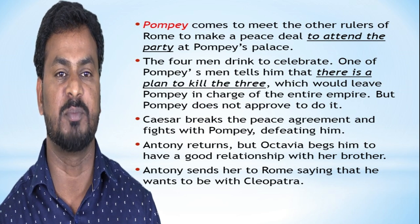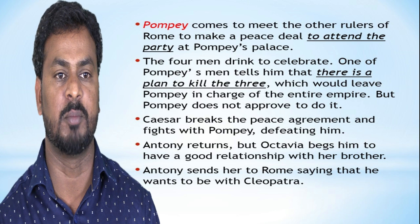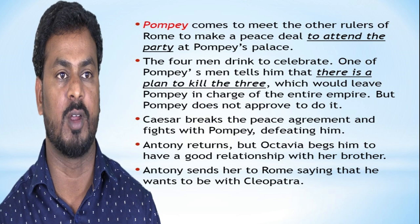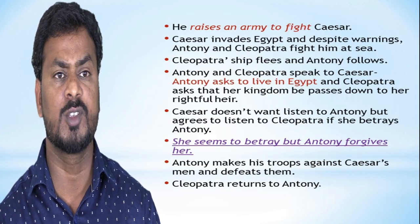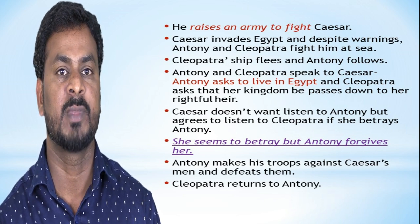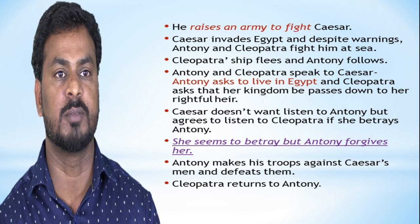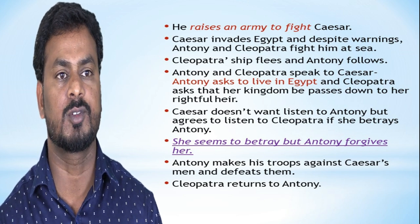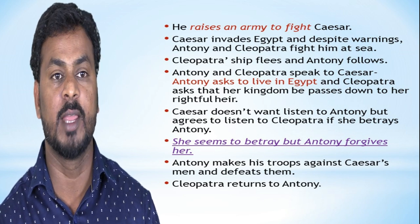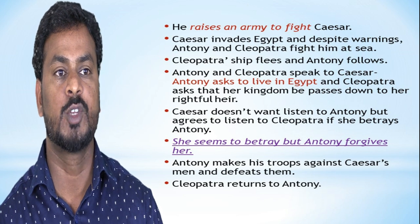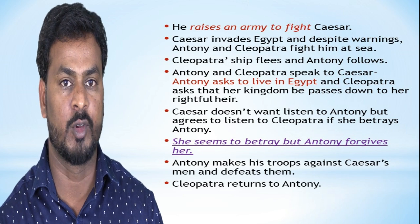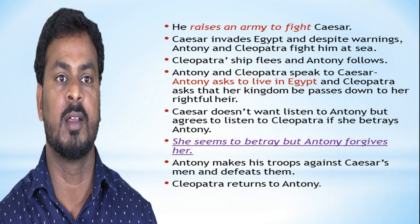Antony returns to Egypt to be with Cleopatra and sends Octavia back to Rome. He raises an army to fight Caesar. Caesar invades Egypt, and despite warnings, Antony and Cleopatra choose to fight at sea. Cleopatra's ship flees, and Antony follows. Antony and Cleopatra then send word to Caesar. Antony asks to be allowed to live in Egypt, and Cleopatra asks that her kingdom be passed down to her heirs.